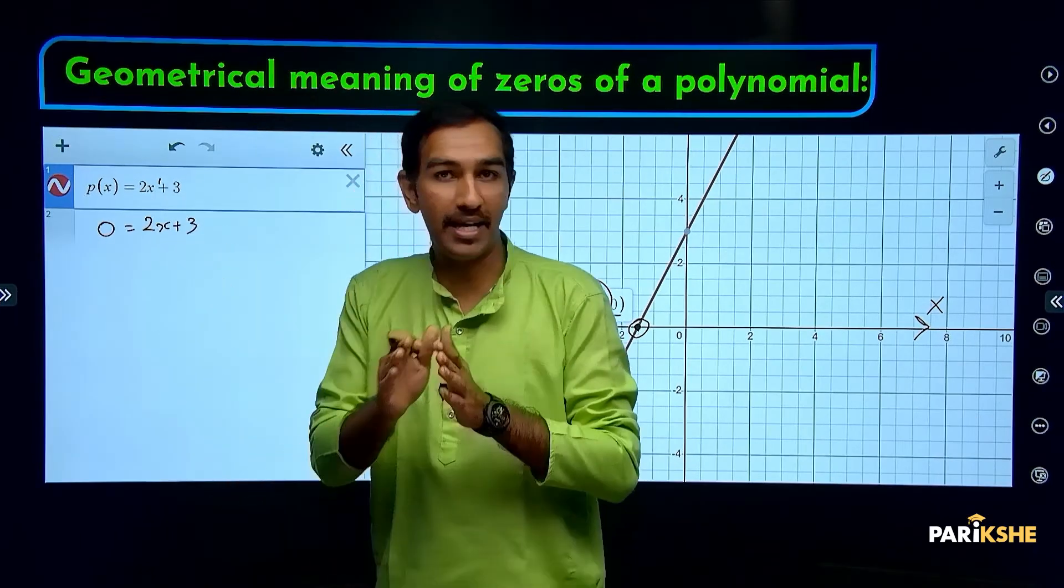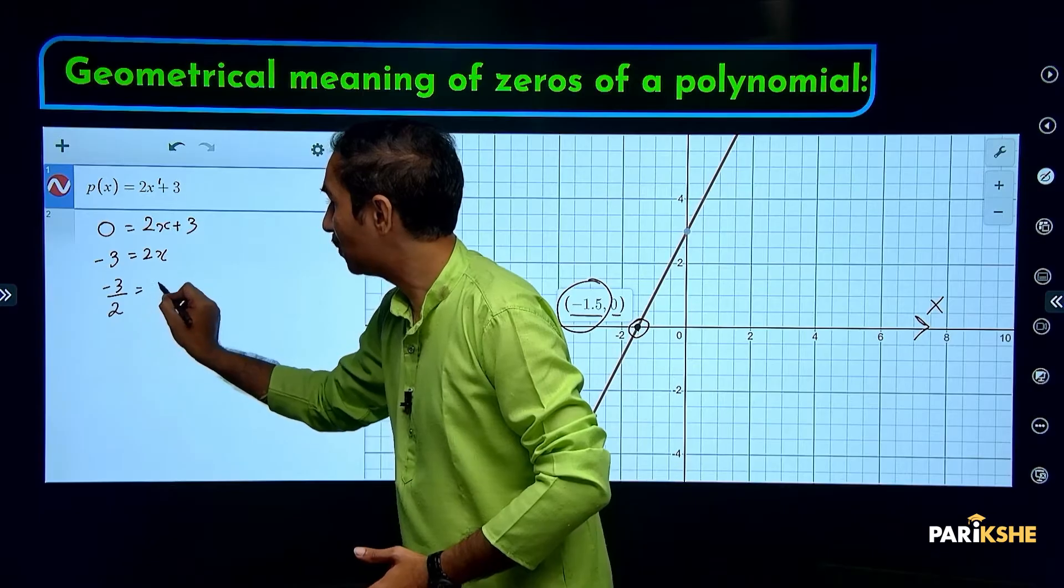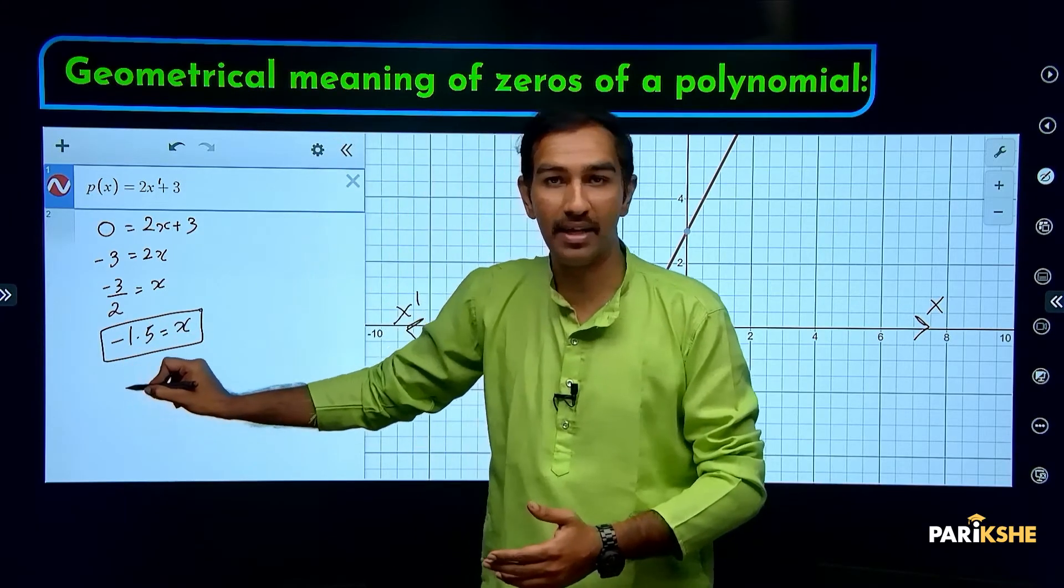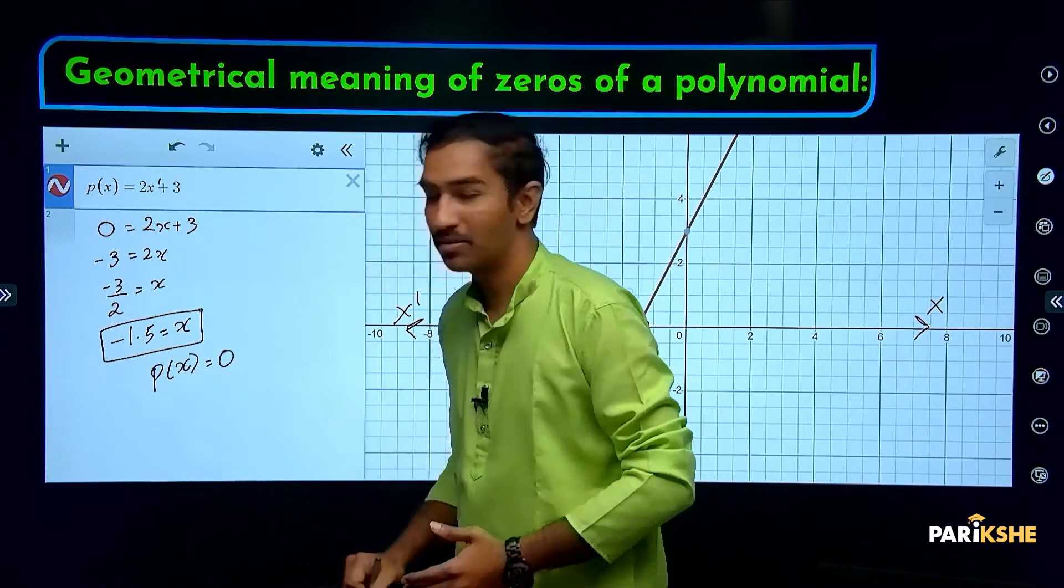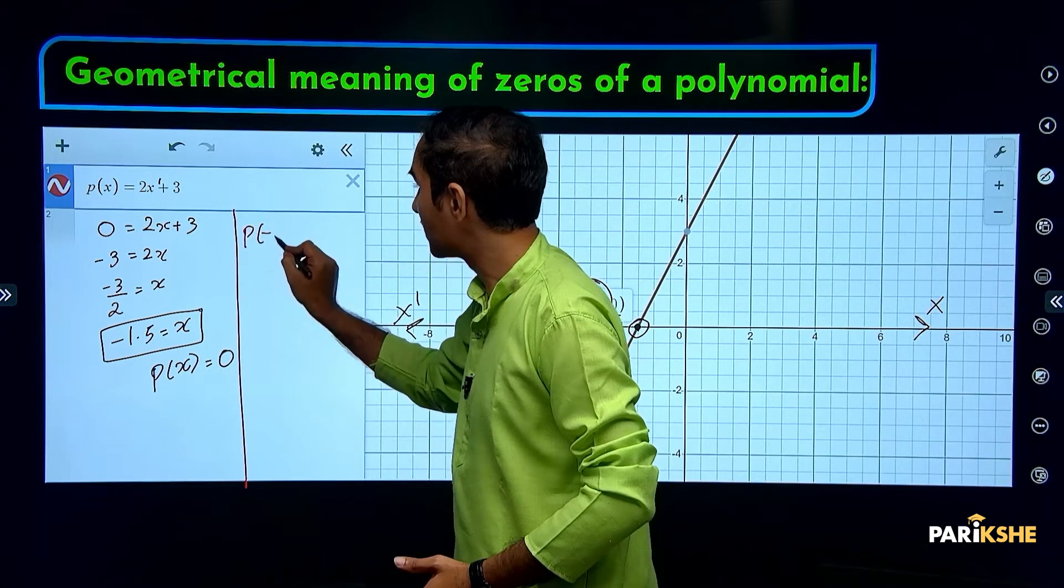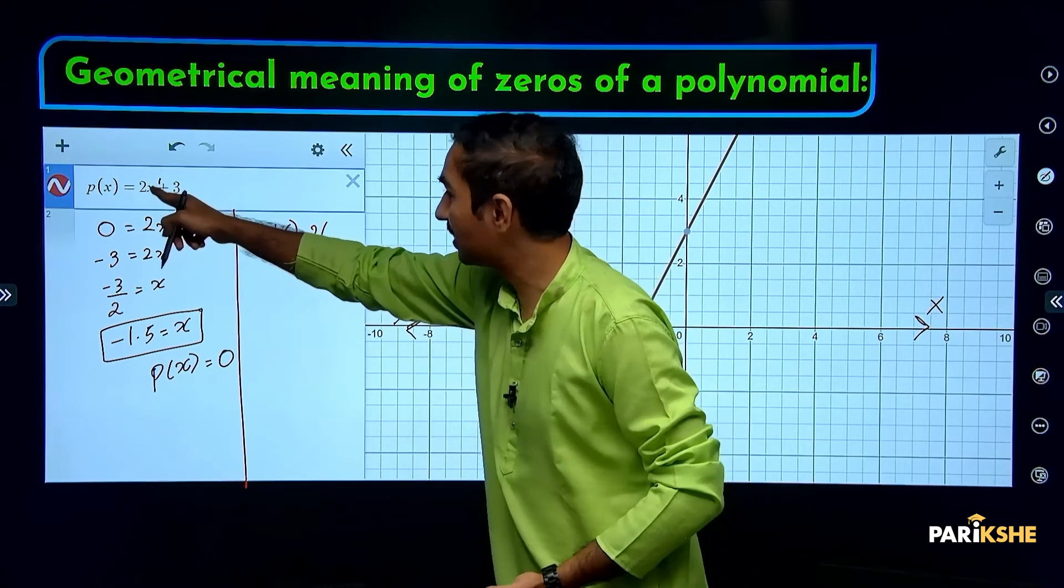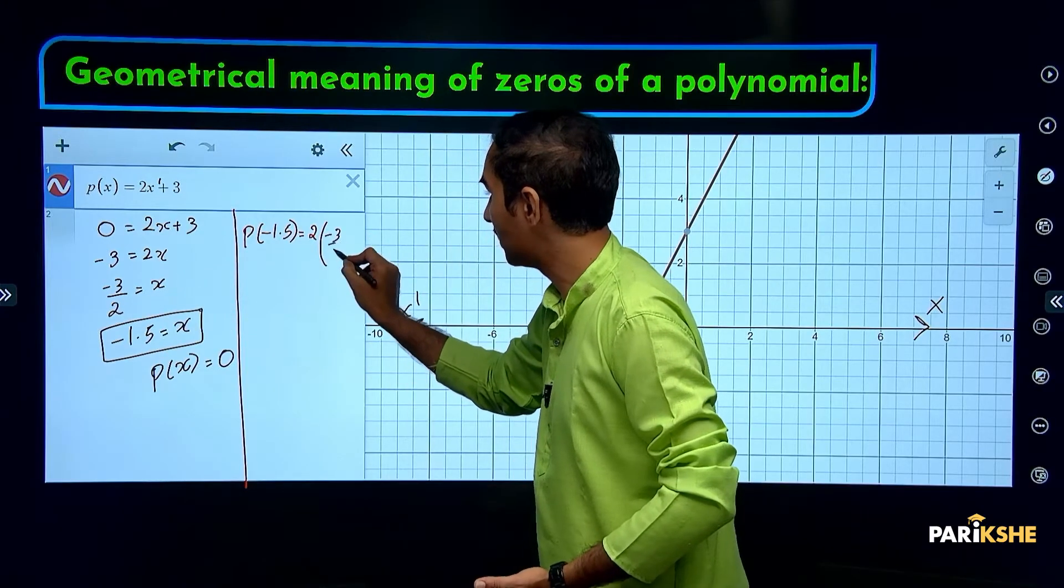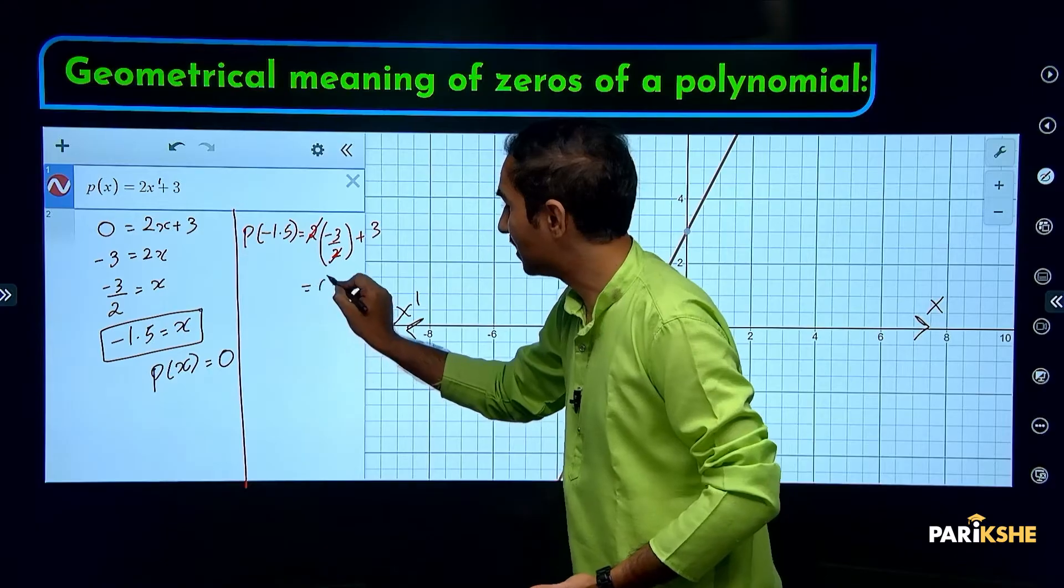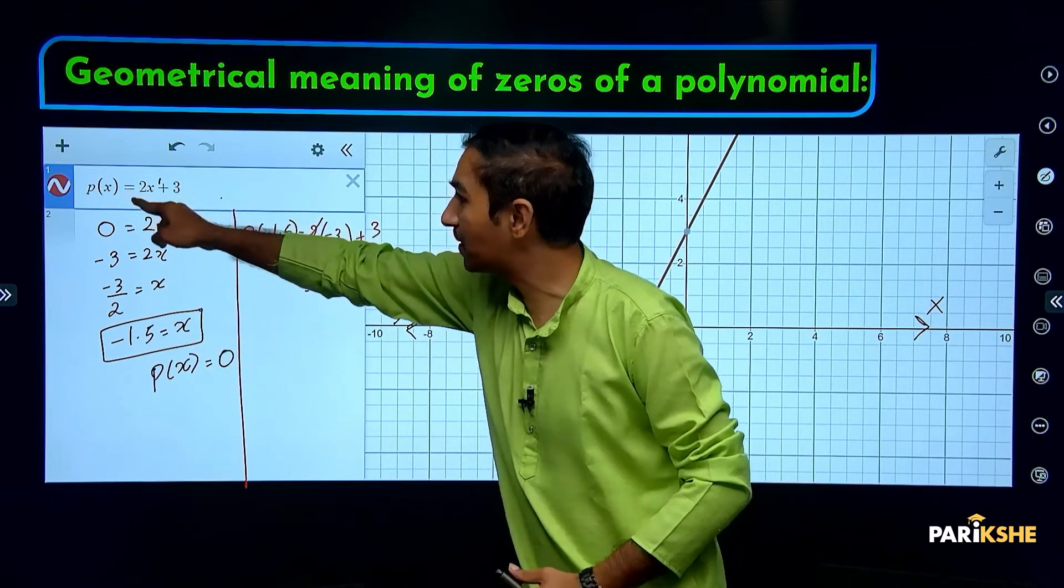The same answer we can get algebraically. First step: make p(x) equal to zero. 2x + 3 = 0. Second step: solve for x. Move 3 to the other side: -3 = 2x. Divide by 2: x = -3/2, which is nothing but -1.5. Let's verify by substituting: p(-1.5) = 2(-3/2) + 3 = -3 + 3 = 0. So x = -1.5 is the zero of the given polynomial p(x) = 2x + 3.